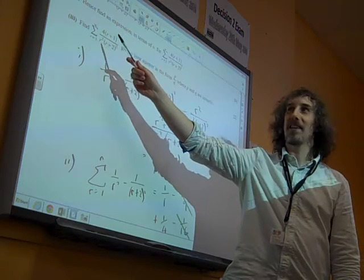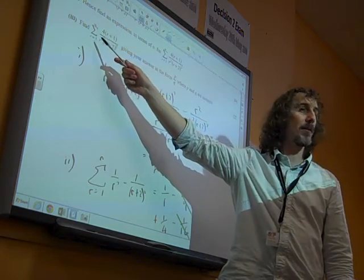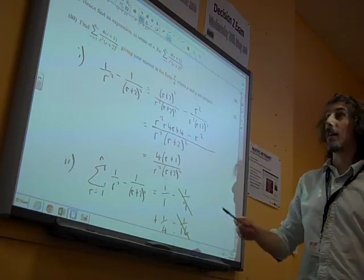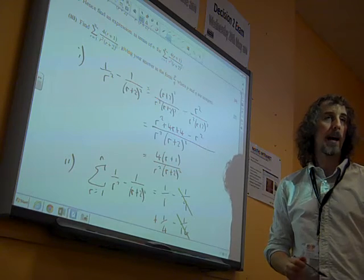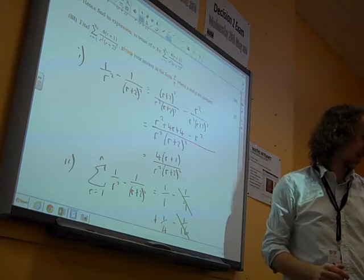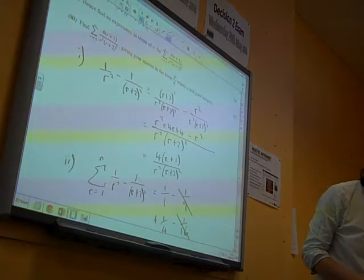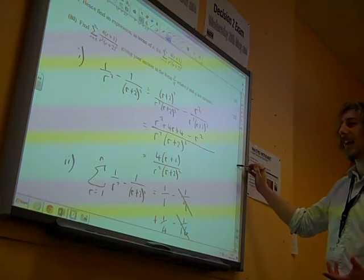Now we need to find the sum as r goes from 5 to infinity of this thing that we've got. Well, we need to think, how does that relate to what we started with? Well, actually, again,